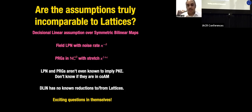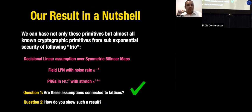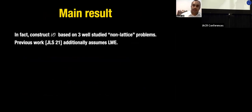These are really exciting open questions in themselves, and I hope the community starts focusing on these problems more aggressively. Now, for the second question — how do we show such a result — rather than constructing every primitive separately, we build something that implies all of them: indistinguishability obfuscation (IO). Our main result is that we can build IO based on these three non-lattice problems.